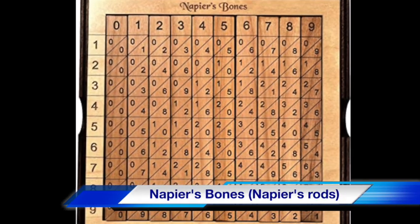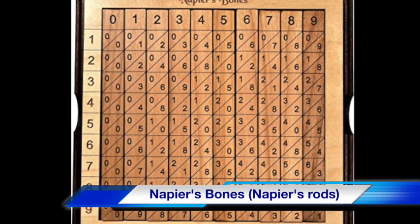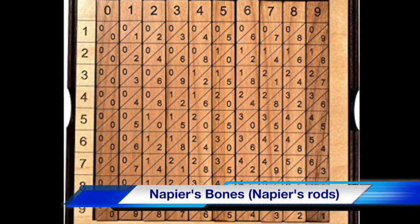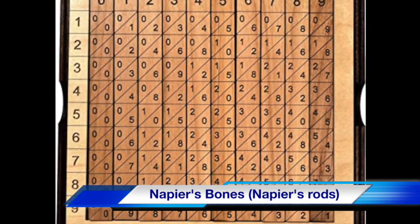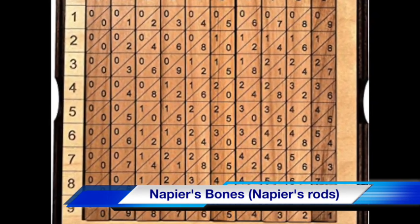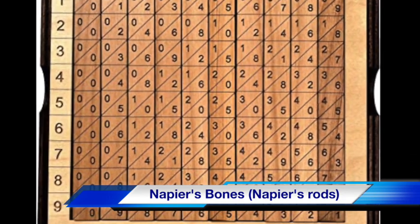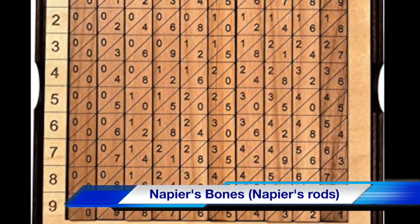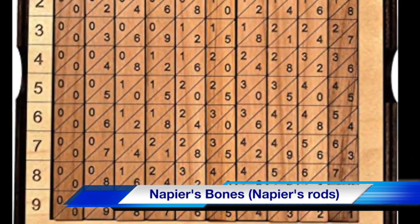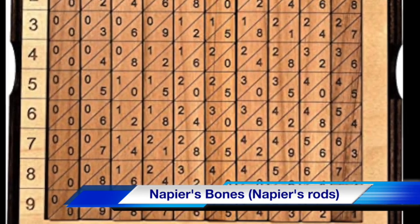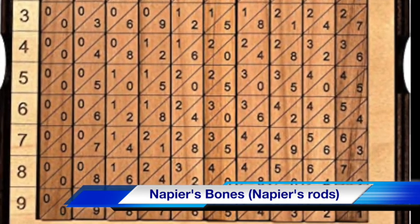Napier's bones is also called Napier's rods. It was developed by John Napier, who was a Scottish mathematician. The device was made of bones that had digits printed on them. Napier's bones simplified the process of multiplying complex numbers.